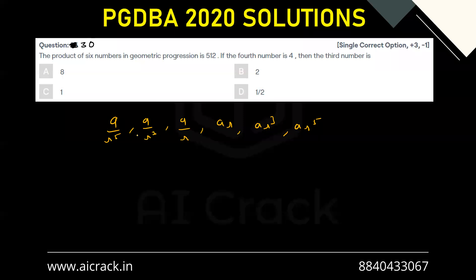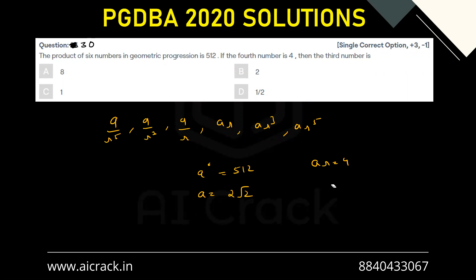The product of these six numbers is given as 512. The r values cancel out pairwise, leaving a⁶ = 512, which gives a = 2√2. Now the fourth term is ar, so ar = 4.